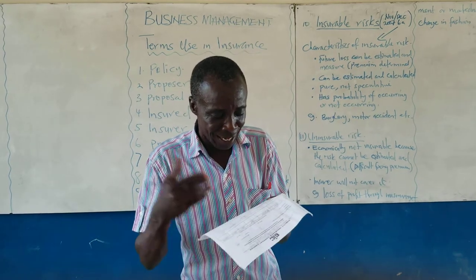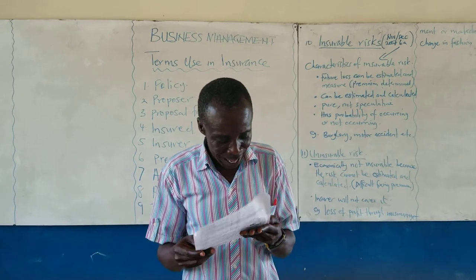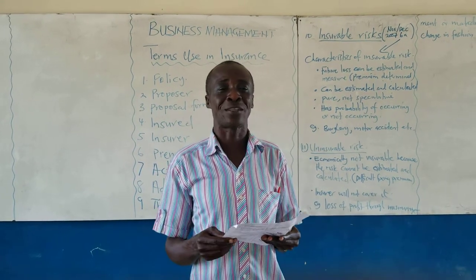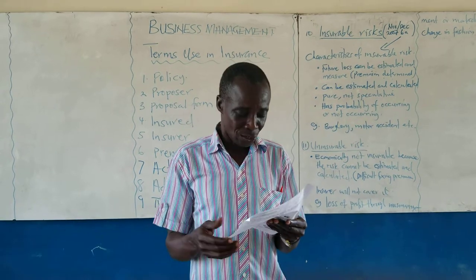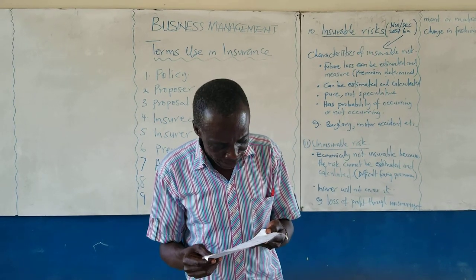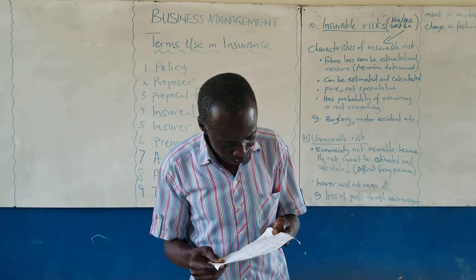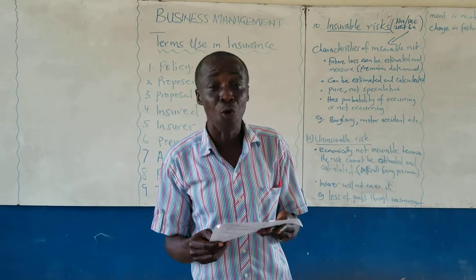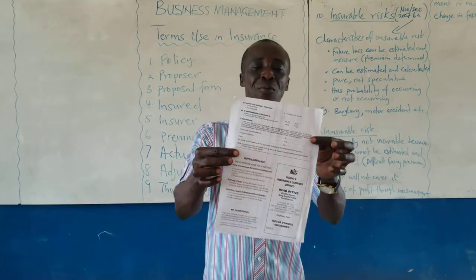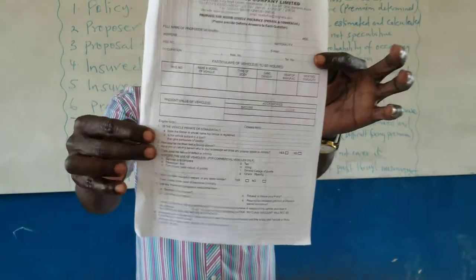The form also asks for the engine number and other questions. For example: Is the vehicle private or commercial? State the owner in whose name the vehicle is registered. Is the vehicle subject to a loan? A lot of information is required. This is the front view of the proposal form.